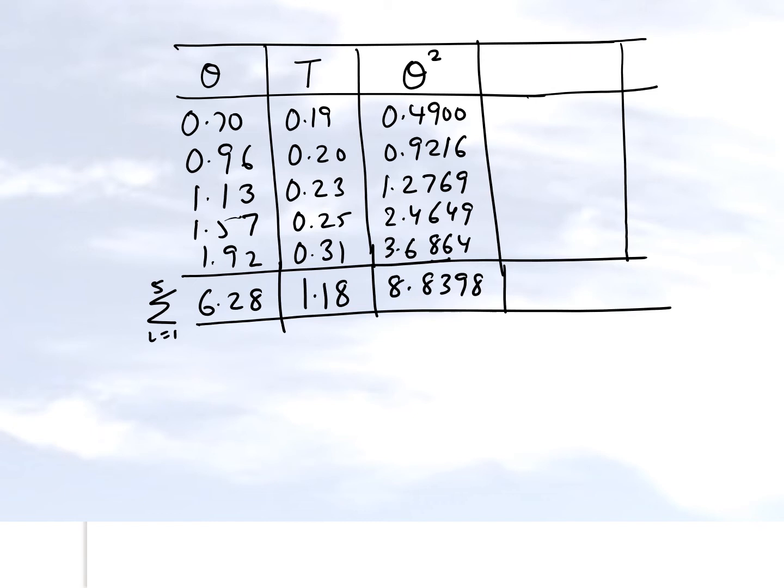Then the next summation which I need to find out is theta t. And so what that means is that I multiply these two quantities for each of the five data points given to us. And those turn out to be as follows. And if I add all of them up, I will get the following number right here.